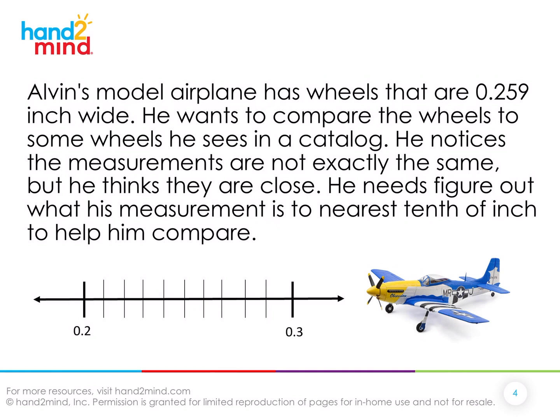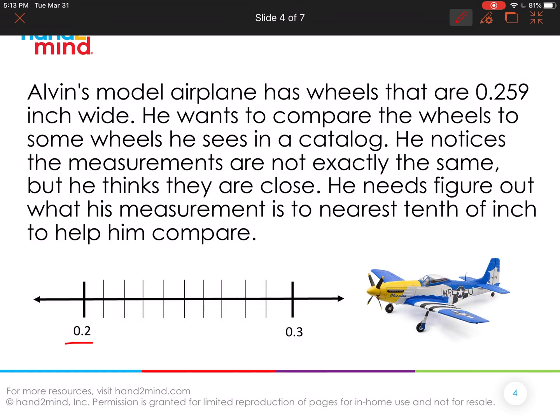And so let's look and see on this number line. We have a number line that starts at two tenths and ends at three tenths because we're plotting a number that has 0.259. So two tenths can be thought of as 0.200 and three tenths can be thought of as 0.300. So this number we know comes somewhere on this number line. So this one would be 0.210, 0.220, 0.230, 0.240, 0.250.